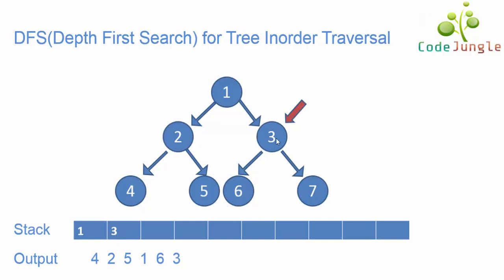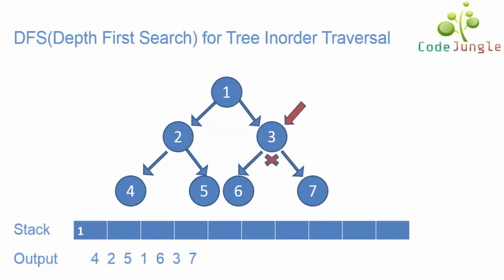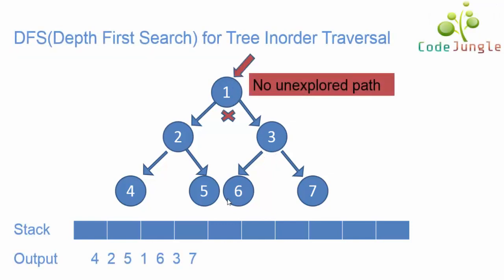Node 3 still has a right child, node 7. We push node 7 into the stack and check if it has any child elements. Since node 7 has no child elements, it is popped from the stack and included in the output. We move back to parent node 3 — since there are no more child elements left, node 3 is popped from the stack. We move back to parent node 1, and since there are no more child elements remaining for node 1, it is also popped from the stack.